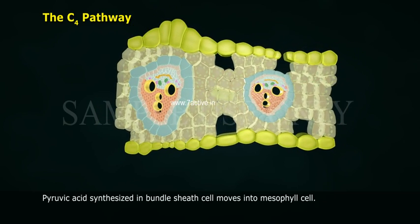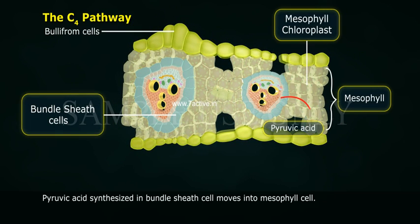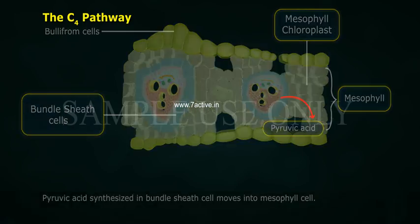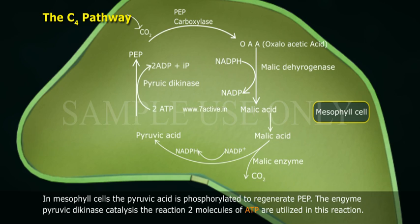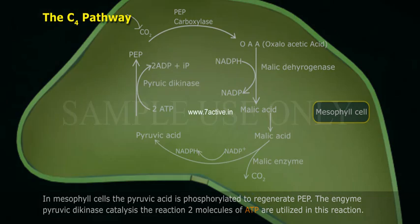Pyruvic acid synthesized in the bundle sheath cell moves back into the mesophyll cell. In the mesophyll cells, pyruvic acid is phosphorylated to regenerate PEP. The enzyme pyruvic dikinase catalyzes this reaction, and two molecules of ATP are utilized in the process.